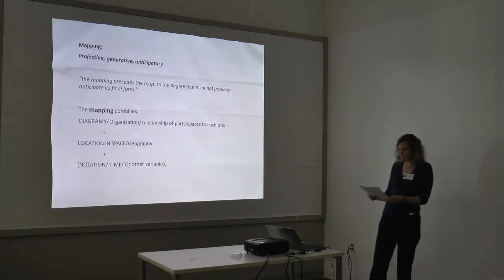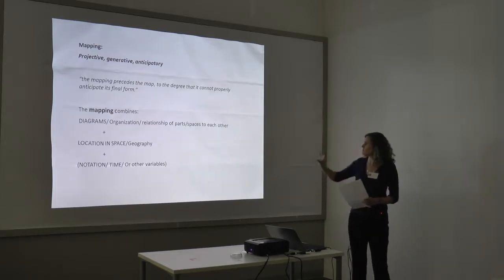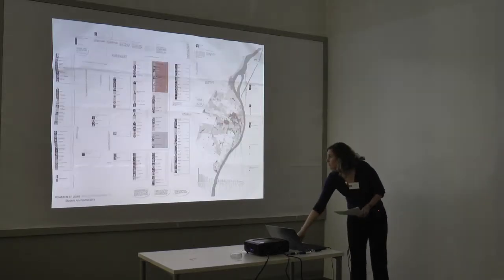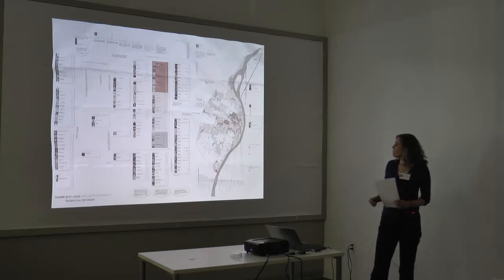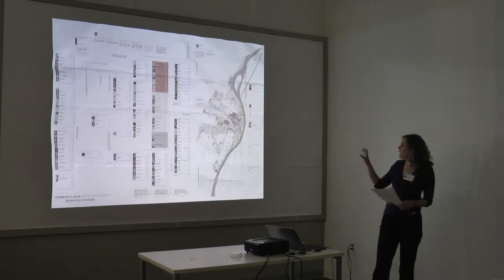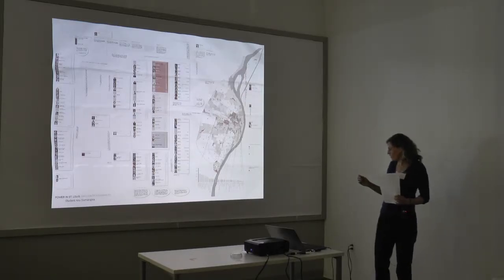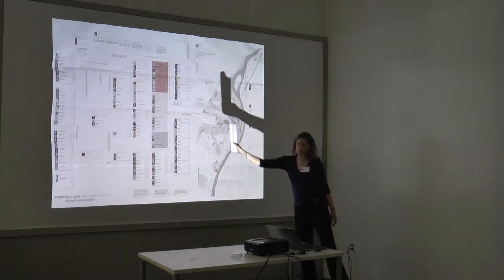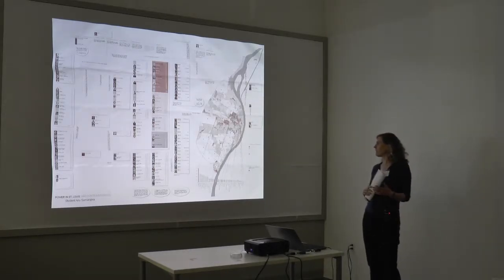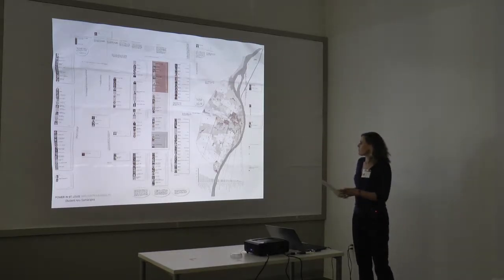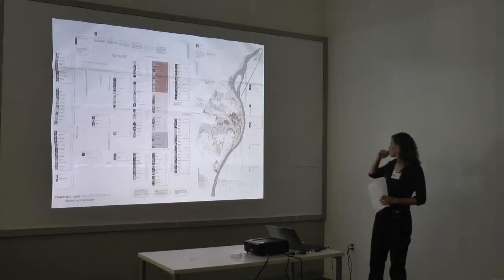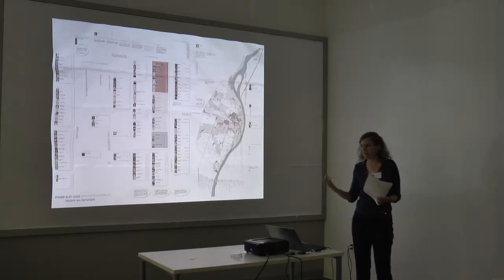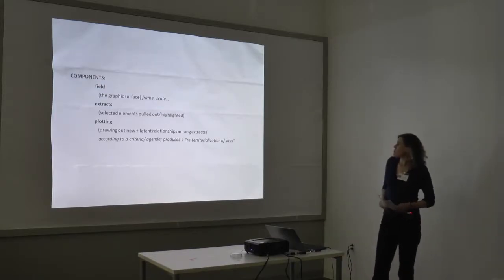Corner describes the map drawing as a combination of diagramming, always locked down in space, sometimes involving notation and time. This student project from last semester captures how mapping might work — it's a picture of St. Louis where many things are being told: the development activity, a breakdown of relationships among political actors, the agencies they belong to, the votes on different development projects. She called it 'Power in St. Louis' — it spatializes development and puts it in a context you wouldn't normally see.